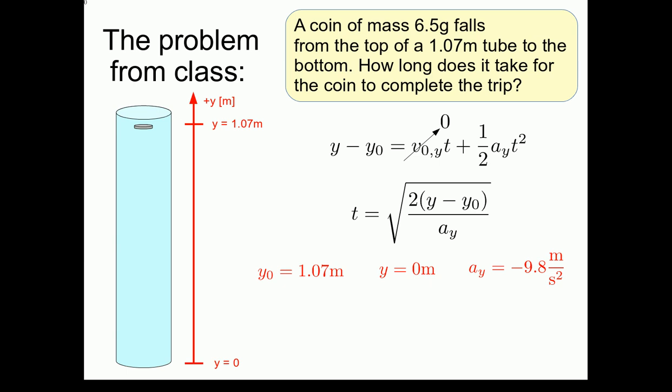Substituting these values into our expression, we see that these two negative signs cancel each other. The result is that what's under the square root sign is positive, which is a good thing. And we get a final result that you achieved in class of 0.47 seconds.